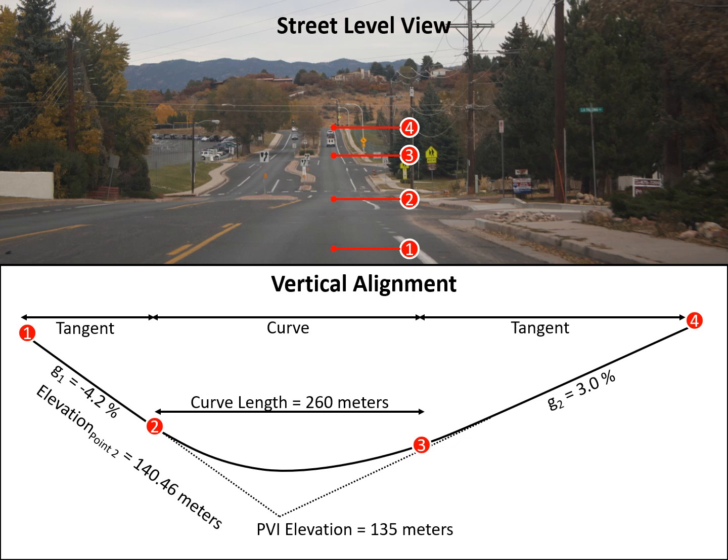The place where our grades come together is the PVI, and the elevation at that point is 135 meters. And our elevation at the PVC, which is 0.2 on this image, is 140.46 meters.